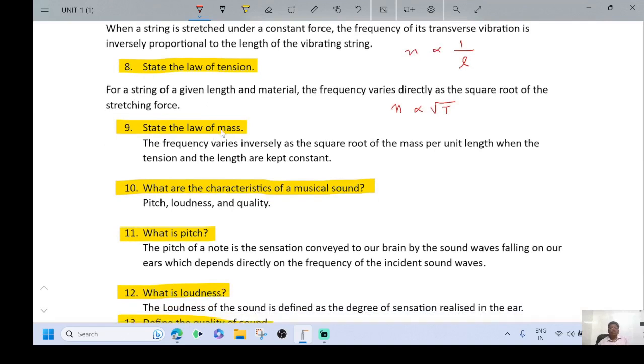State the law of mass. The frequency varies inversely as the square root of the mass per unit length when the tension and length are kept constant.